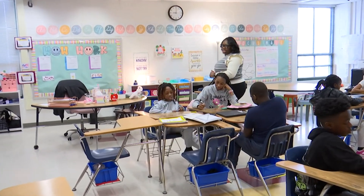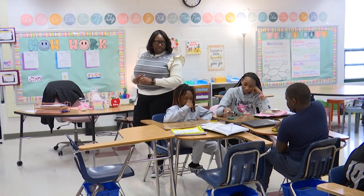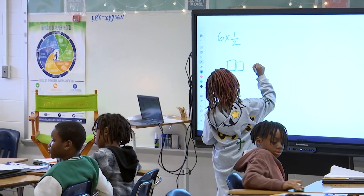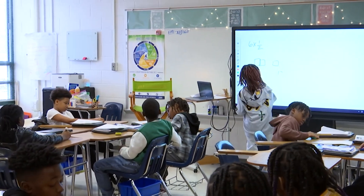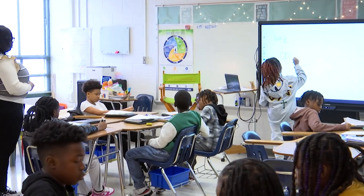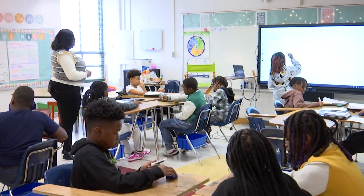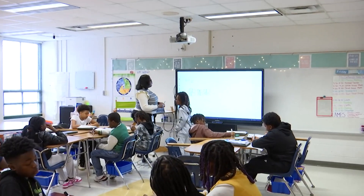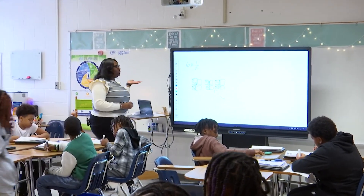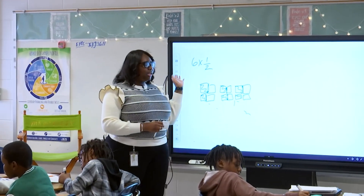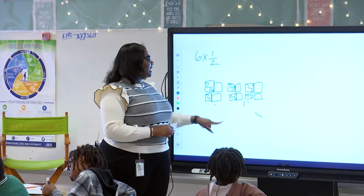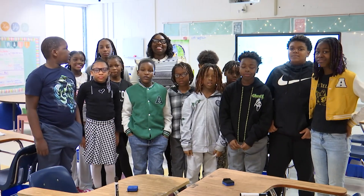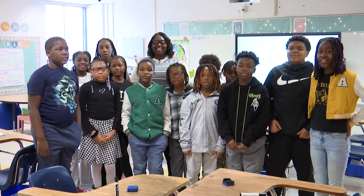Multiplying fractions — is one of you willing to come demonstrate on the board? Alright, six times one half. You divided that up perfectly — nice job. So six times one half: to split it in half, we're shading in half of it, and we're doing it six times because we have six groups. Nice job Josiah. Thanks for joining us today — I hope you enjoyed our lesson on fractions. Go Rams!